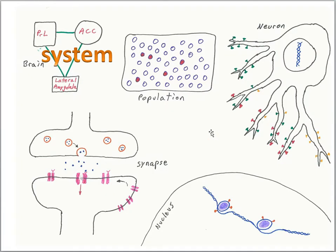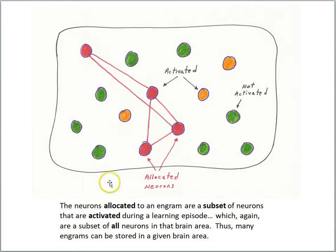This is another lesson in the series on finding the engram. In this lesson, we'll focus on how memories might be linked. We've earlier encountered the idea that memory can be analyzed at different levels. At the system level, an engram may be distributed over different brain regions, and within brain regions there are populations of cells. A certain population of cells may be processing whatever is happening, and then a subset of them will go on to become part of the engram to store the memory for that event.